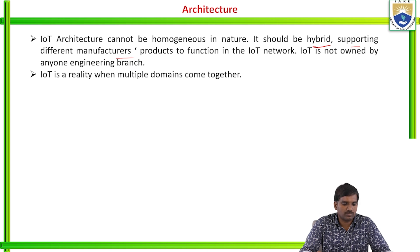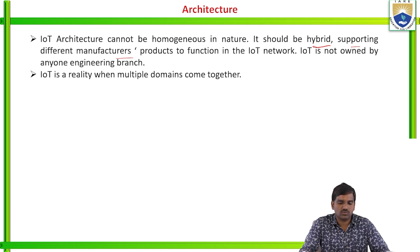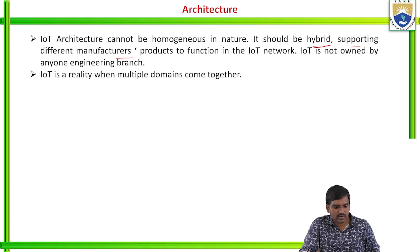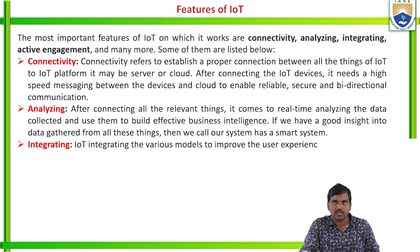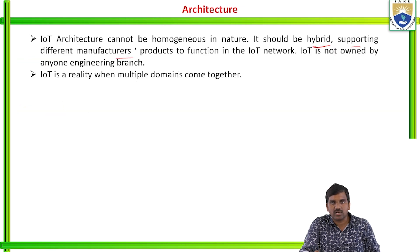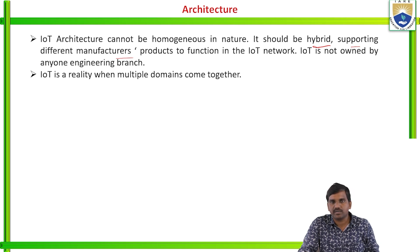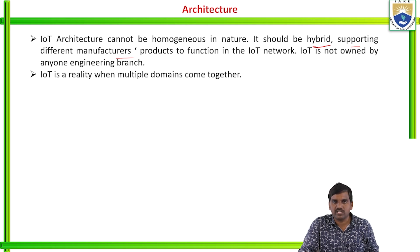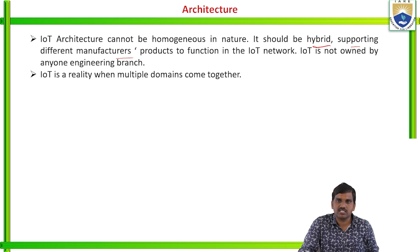IoT is not owned by any one engineering domain. It is a reality when multiple domains come together. So the last characteristic, architecture, is covered. To summarize the characteristics of IoT: self-dynamic and self-adapting, interoperable communication, integrated into information network, architecture, scalability and connectivity — these are the characteristics of IoT we need to know.